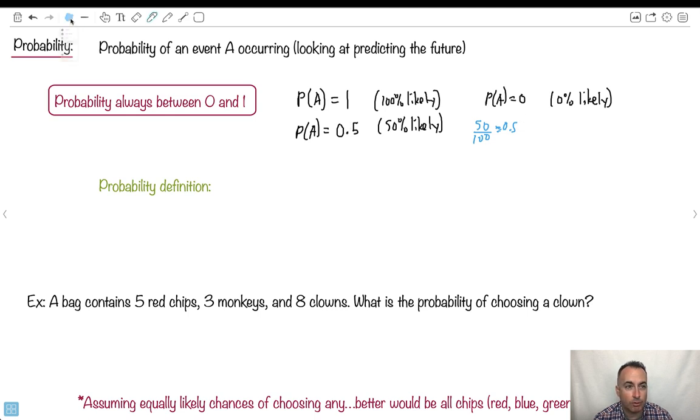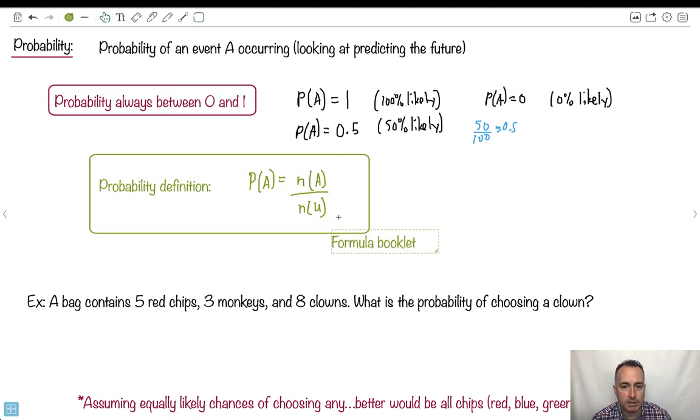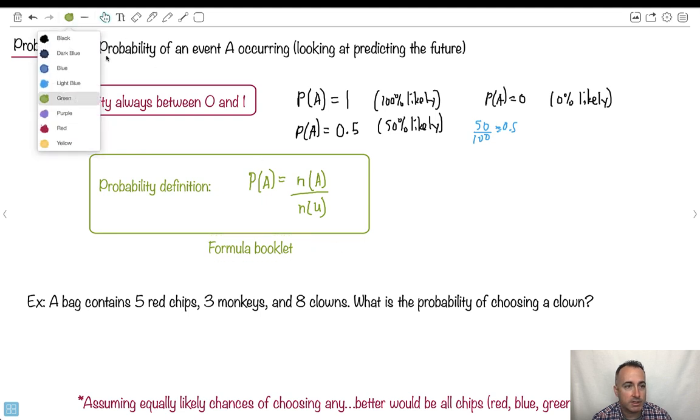How do we formally define the probability? This is in your formula booklet. Probability of A occurring - how do we actually figure this out? We say it's n(A) over n(U). This is a formal definition, so this is important. This is in your formula booklet.